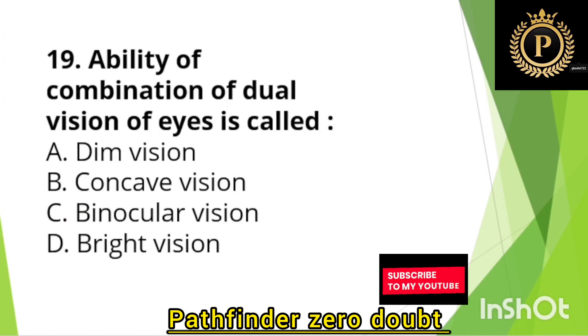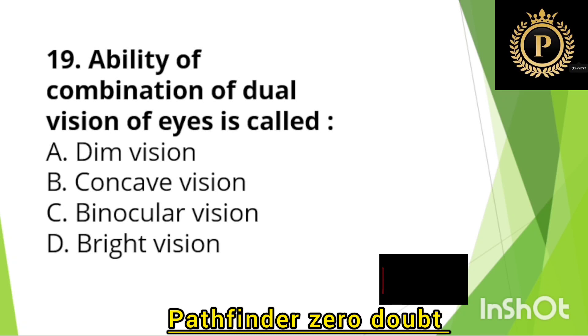The ability of combining dual vision of the eye is called — Option C: Binocular vision.